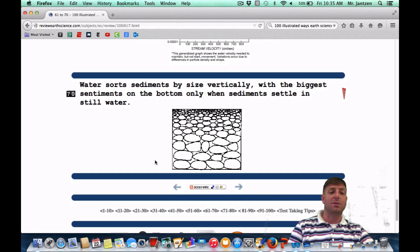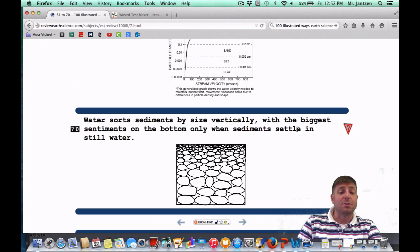And number 70: Water sorts sediments by size vertically with the biggest sediments on the bottom only when the sediments settle in still water. So once again, in still water, the biggest stuff is going to go to the bottom first, and the smallest stuff is going to be on top of that. We call this vertical sorting. There's horizontal sorting too, we'll get into that later. But vertical sorting is the biggest on the bottom, smallest on the top. If we were to see this as a regions question, it may look something like this.